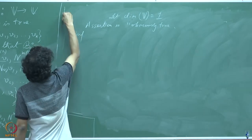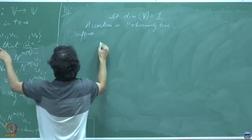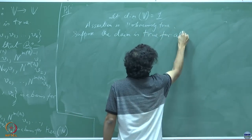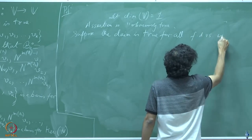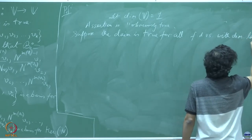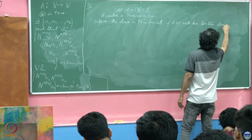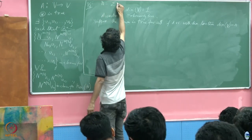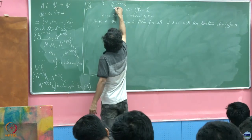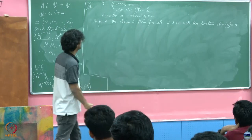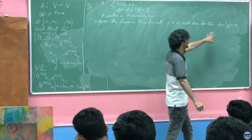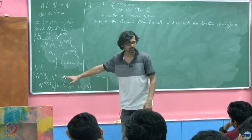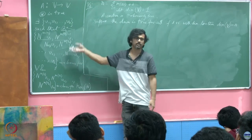We suppose the claim is true for all finite dimensional vector spaces with dimension less than dimension V, which is equal to n. We know that n equals summation of m(v_i), i going from 1 through k, plus k. So suppose this is true for all finite dimensional vector spaces with dimension less than n — for dimension 1, dimension 2, dimension 3 until dimension n minus 1, we will always be able to find this. We have already seen this to be true for 1; that is trivial. So let this be true for all numbers from 1 through n minus 1.